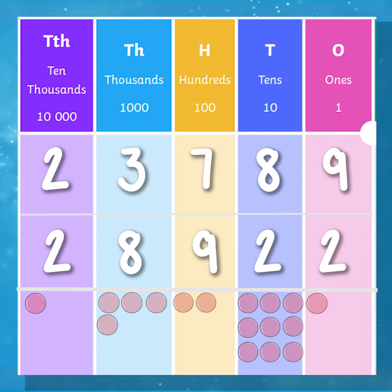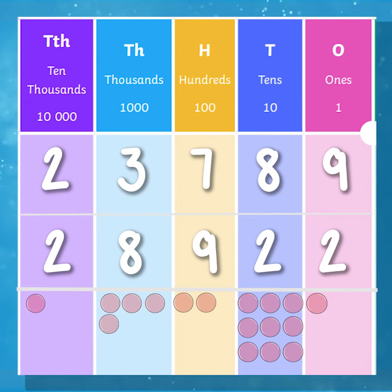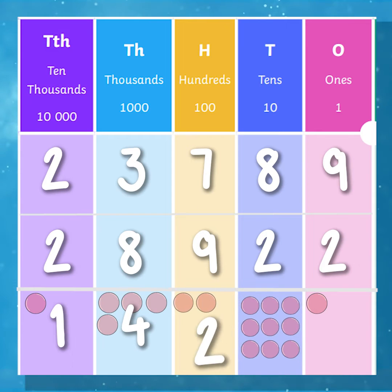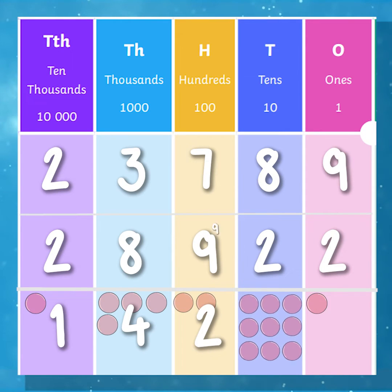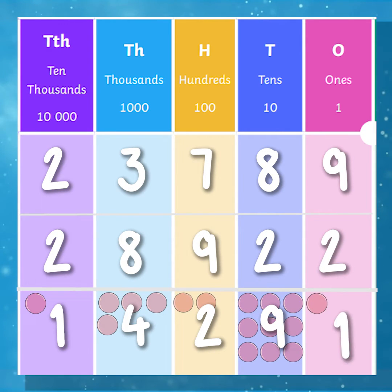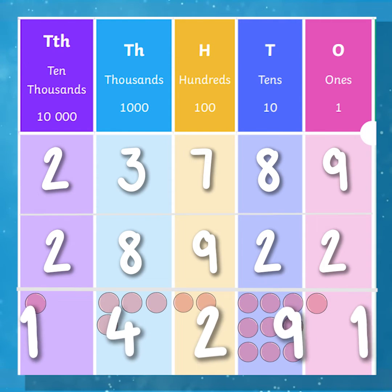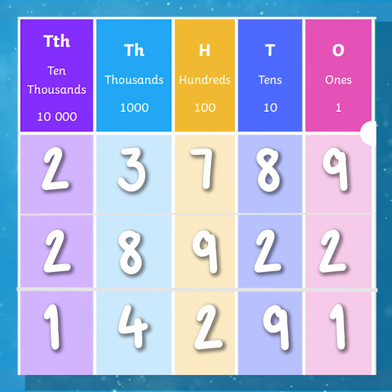And finally, the third number has a one in the ten thousands, a four in the thousands, a two in the hundreds, a nine in the tens, and a one in the ones. This means our third and final number is 14,291.